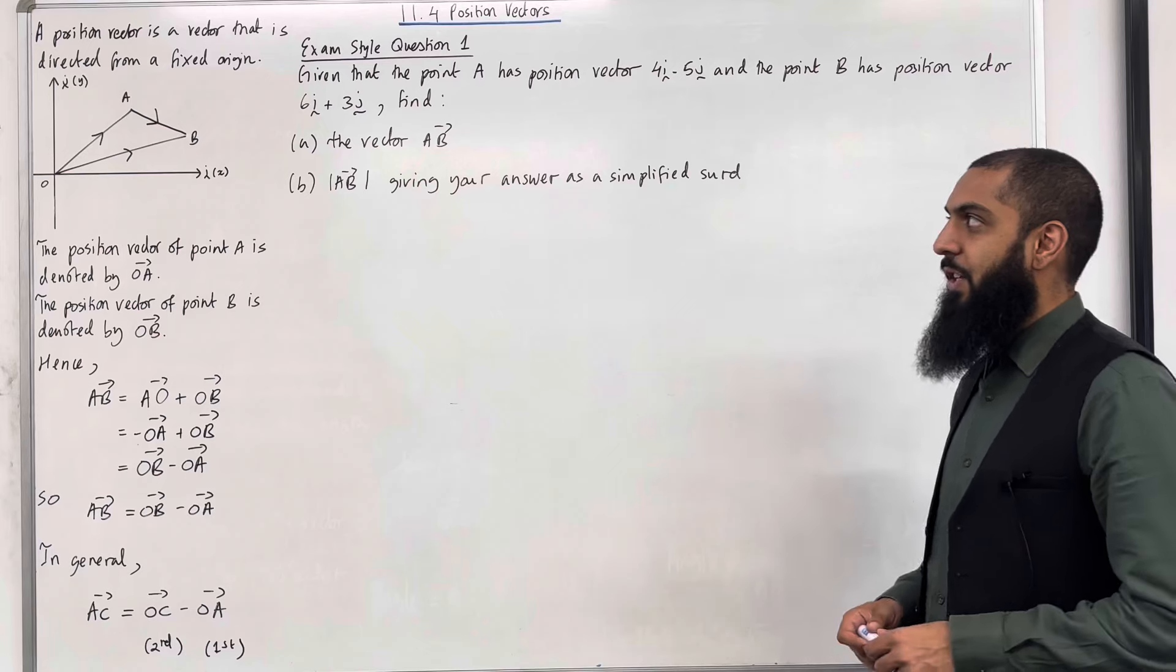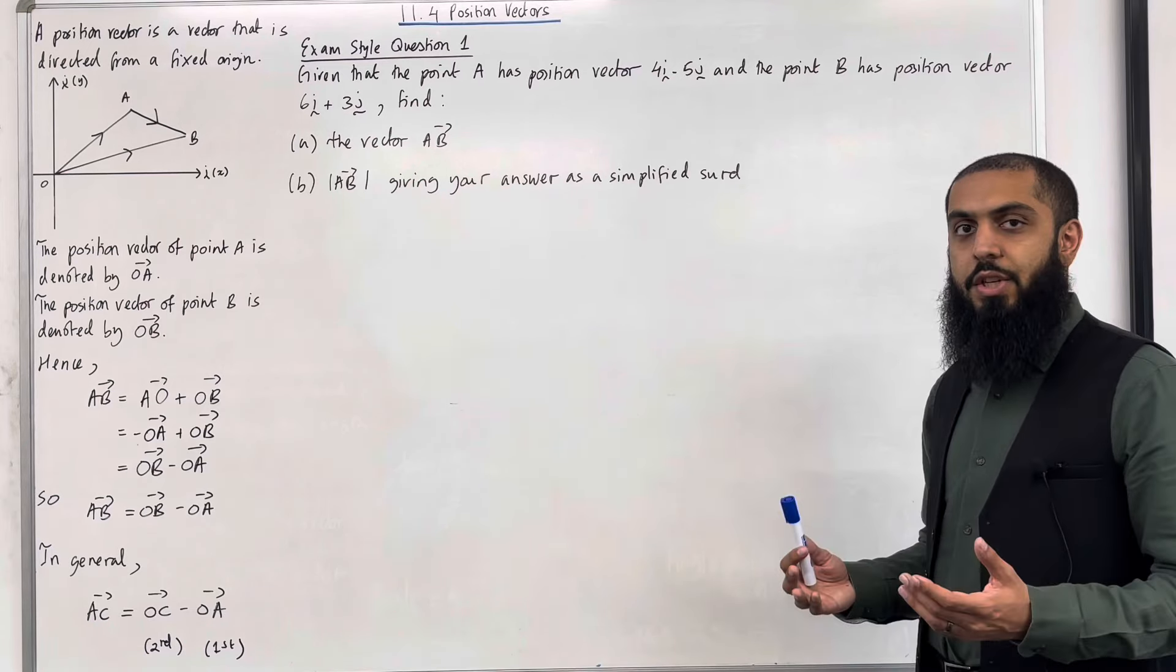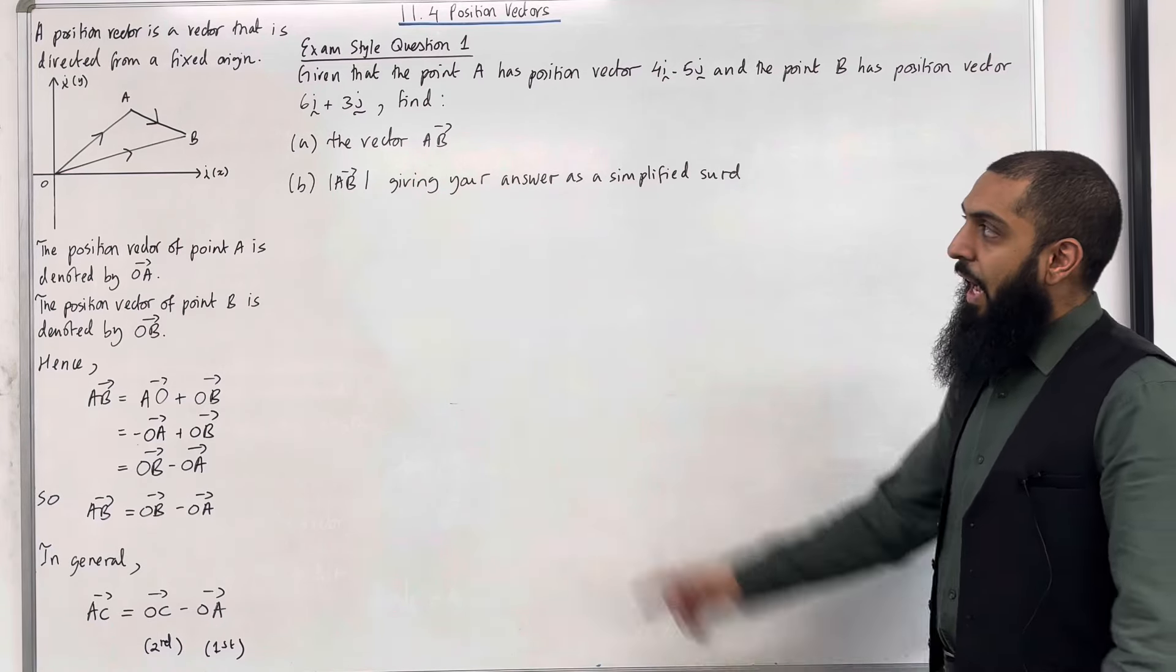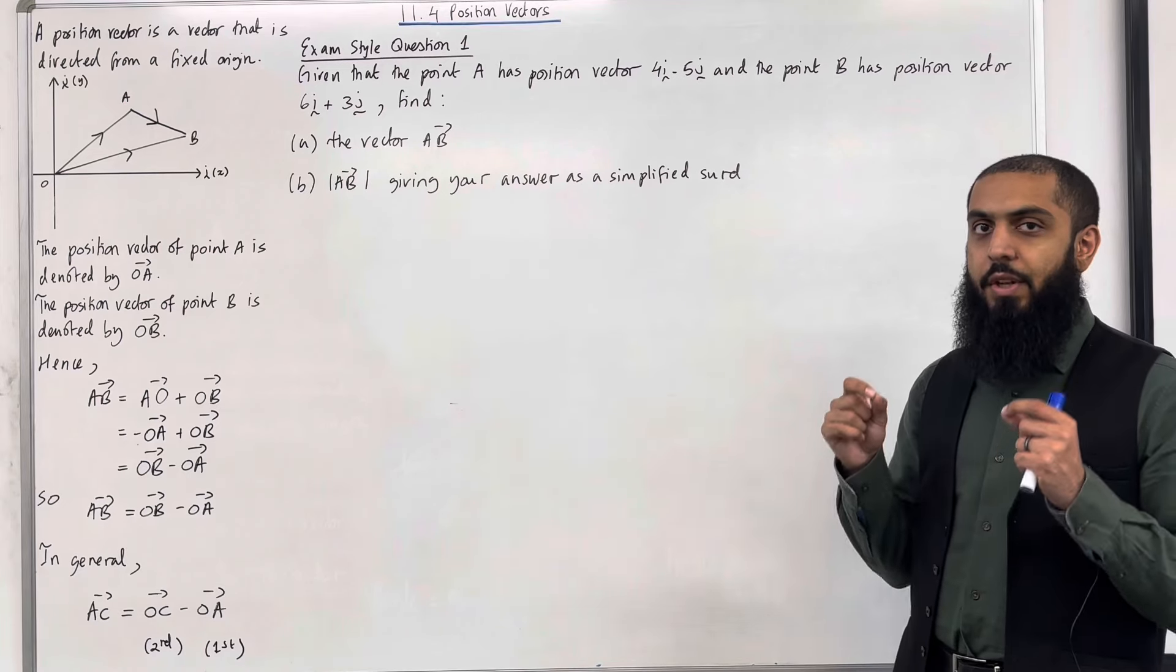Let's have a look at the key facts of this section. Firstly, what is the definition of a position vector? A position vector is a vector that is directed from a fixed origin.